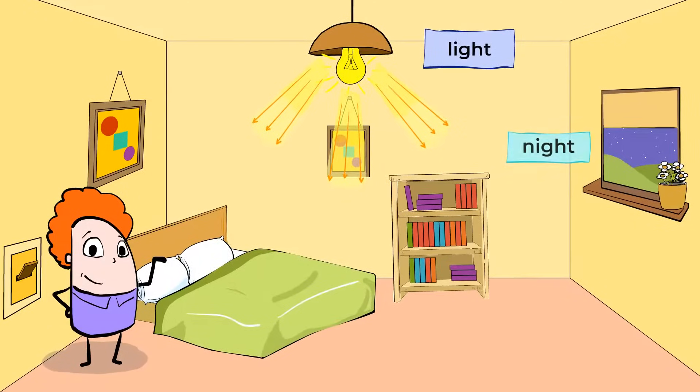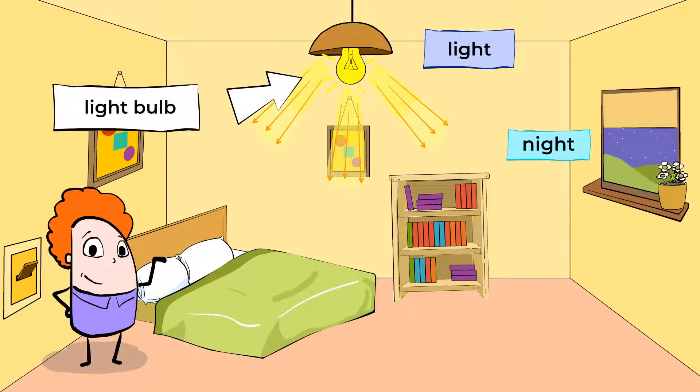At night, the sun, our natural light source, is gone. And that's why it's so dark outside at night. And so we need to use man-made light sources, such as the light bulb over here that you can see.